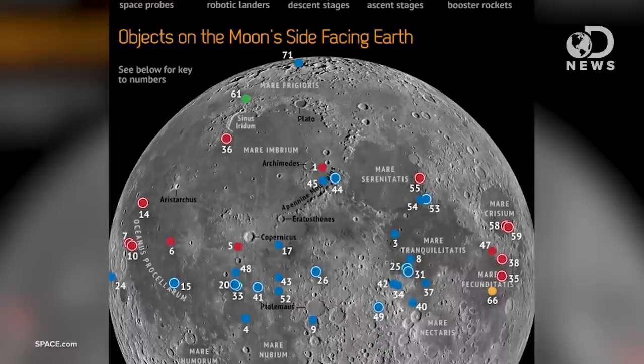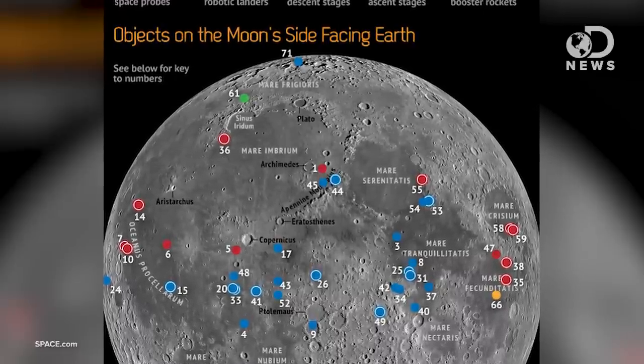If you include the facing side of the moon, because the moon doesn't rotate, it always faces us with the same side, there's 71 different sites with leftover bits of equipment from us, the Soviets, Japan, India, China and the European Space Agency spanning from the late 50s into this decade.